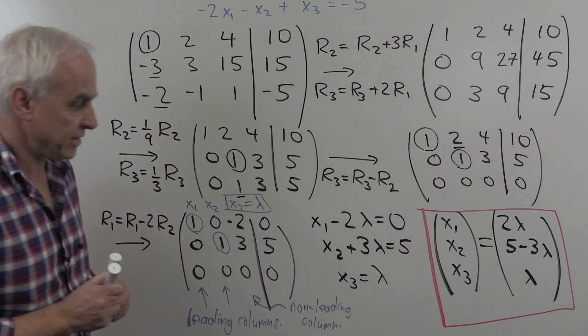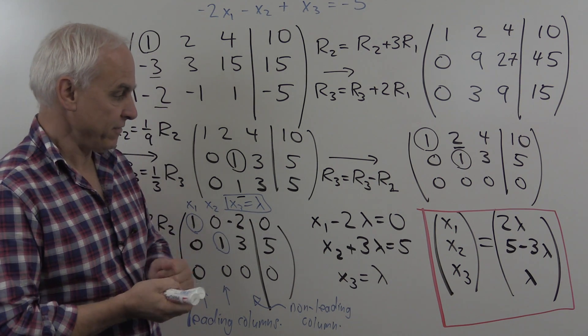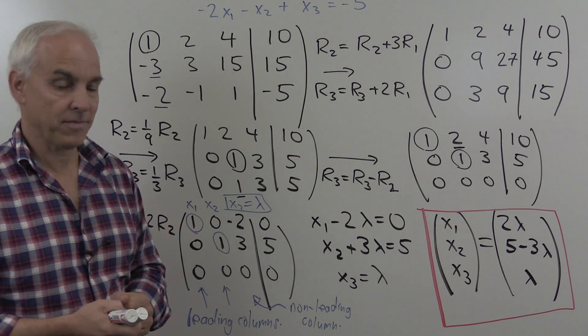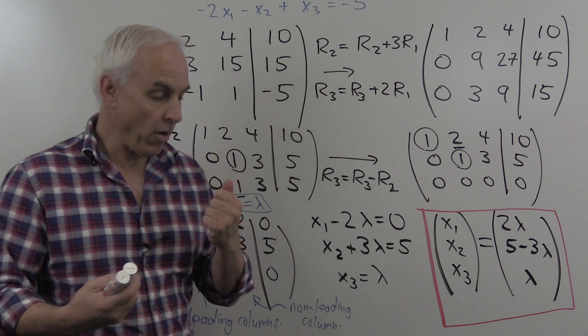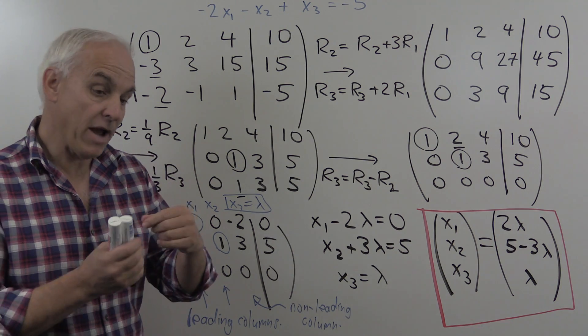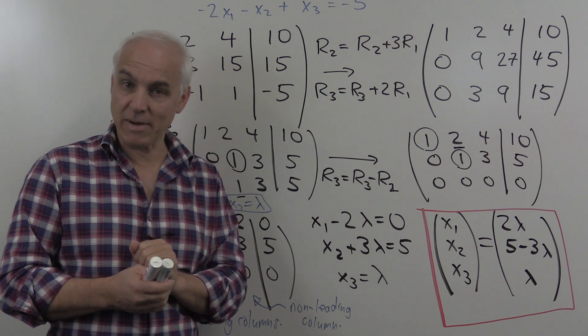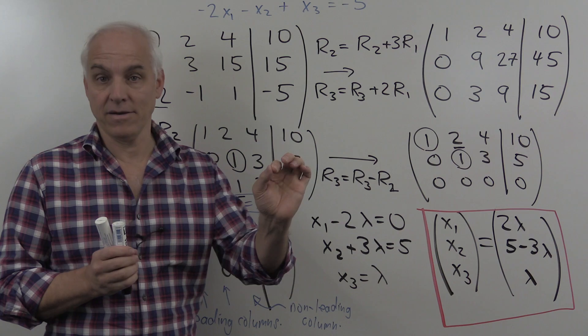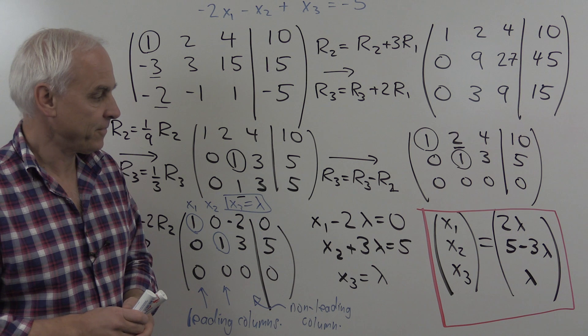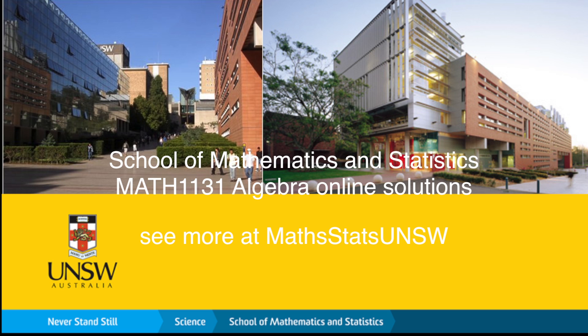And that is a description of all the solutions of this original system. So you take any choice of lambda you like, for example, lambda equals 1, and you plug that in here, and you will get a solution to the system. You take another value of lambda, say lambda equals minus 4, you plug that into here, you can get another solution to the system. So geometrically, what we have is that the three equations, which represent three planes in three-dimensional space, meet in a line. And that line is described parametrically exactly this way.